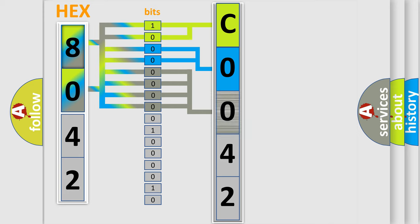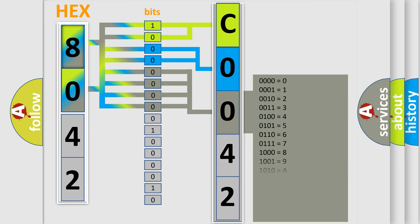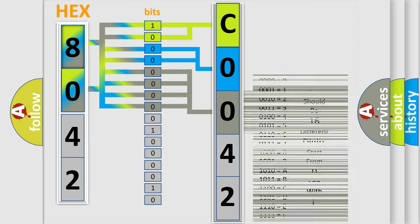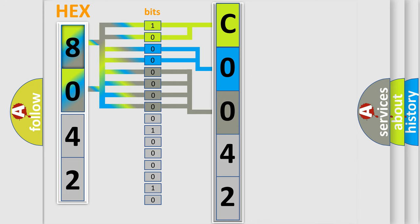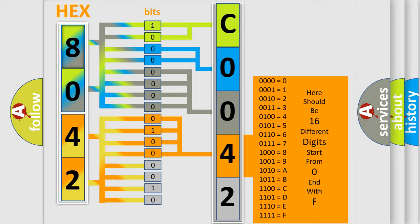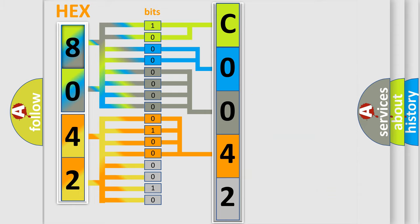The second byte is composed of a combination of eight bits. The first four bits determine the fourth character of the code, and the combination of the last four bits defines the fifth character. A single byte conceals 256 possible combinations.